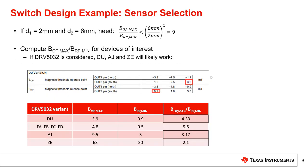Here is an example illustrating the application of the sensor selection criterion to the DRV5032 family of Hall effect switches. Given that the switching distances are D1 equal 2 mm and D2 equal 6 mm, it is expected that a sensor with B-op max divided by BRP min less than 9 would be suitable.